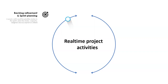Once the analyst and scrum master added stories to the backlog, the first meeting that happens is backlog refinement. As part of this meeting, the scrum master with leads and product owner will pull the stories to the sprint.